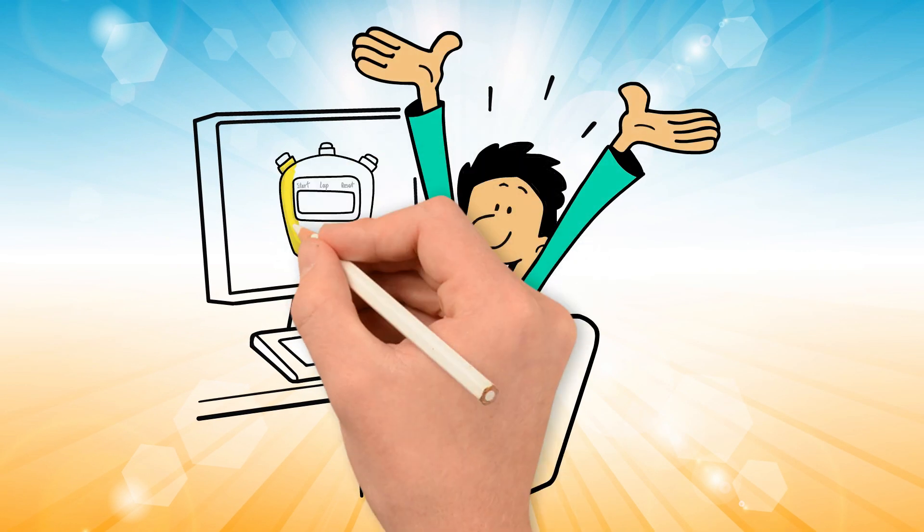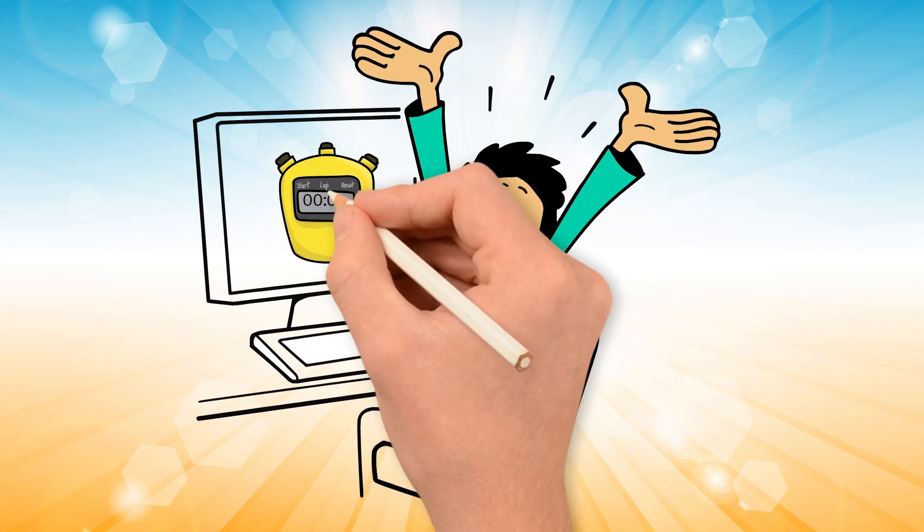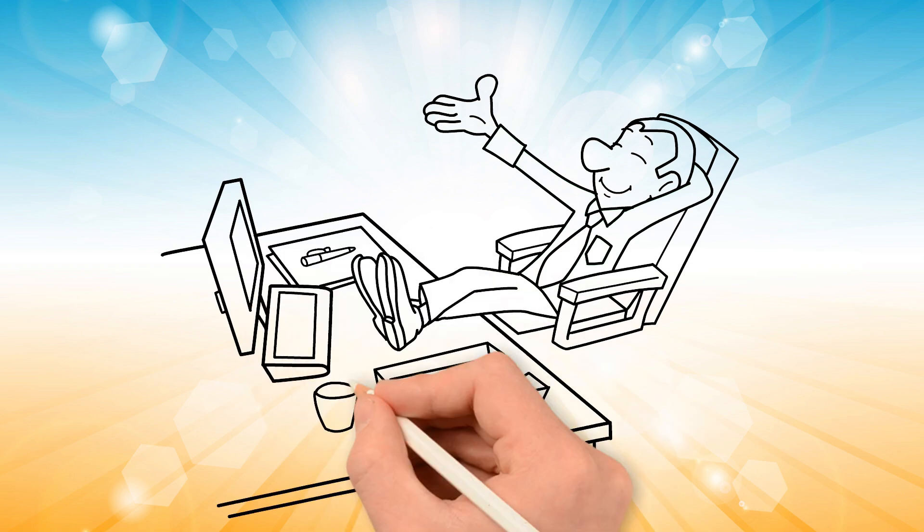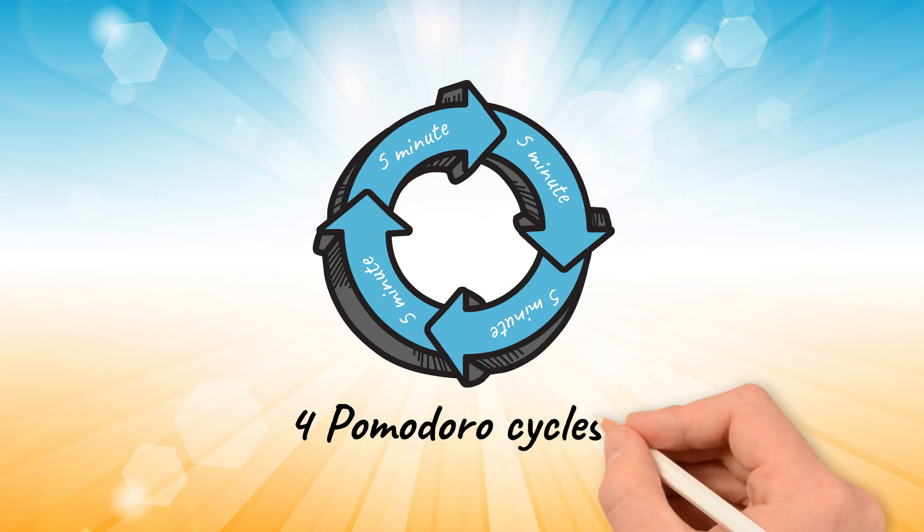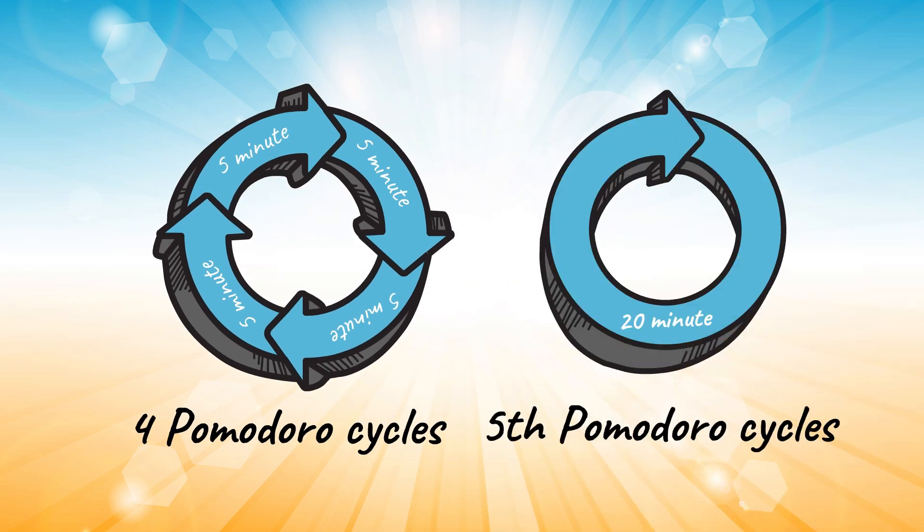To get the most out of the breaks, I suggest getting up during the five-minute break and not taking the break at the same spot or place that you were working. Also, after four Pomodoro cycles, take a longer break of 20 minutes.